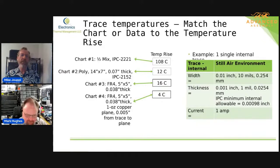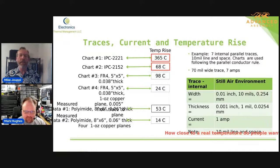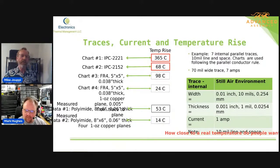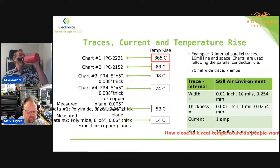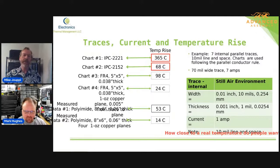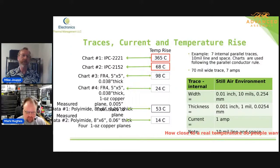Now let's take a look at the parallel traces. We'll look at these same configurations. We're going to compare seven traces — they're all laid out at 10 mil line and space. So each trace is 10 mils wide, and the spacing between each trace is 10 mils. There are seven of them. The rule in the standards for sizing parallel conductors is that you add up all of the trace widths and then size that for the total current. We're running one amp through each of the traces, so we sum all of those traces and get 70 mils. We size the trace for 70 mils at seven amps.